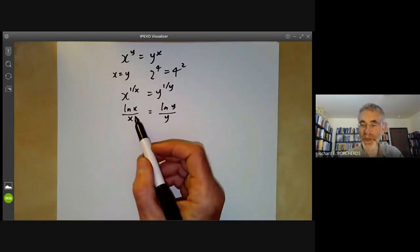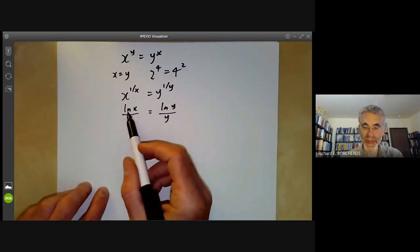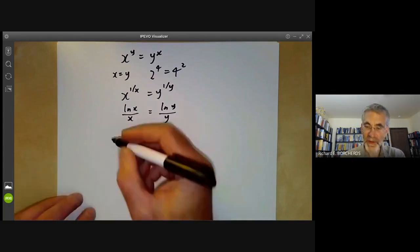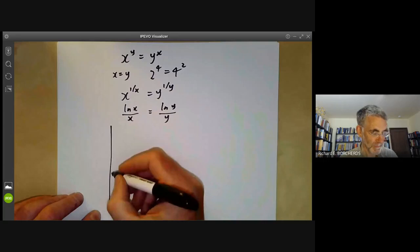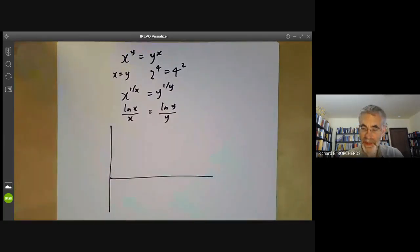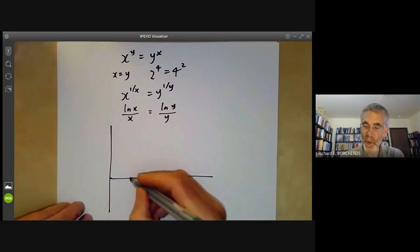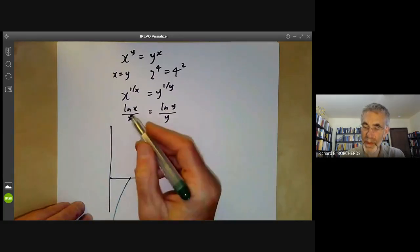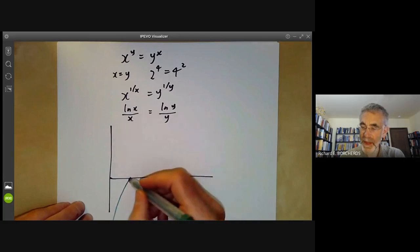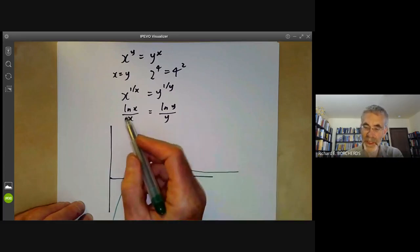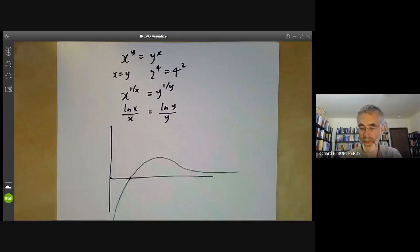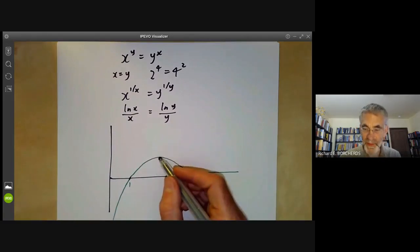So obviously what we should do is we should draw the graph of log of x over x to see what it looks like. And the graph looks a bit like this. So it's equal to zero at x equals one. For x less than one, it tends to minus infinity. And as x tends to infinity, it tends to zero because x is much bigger than log of x. So it looks something like this. Here's the point one.